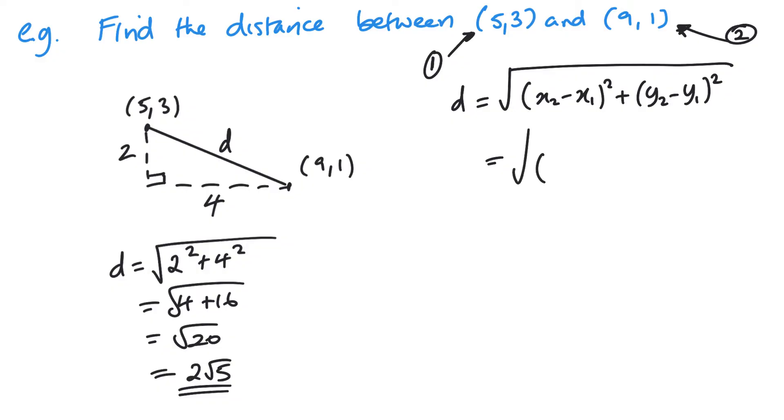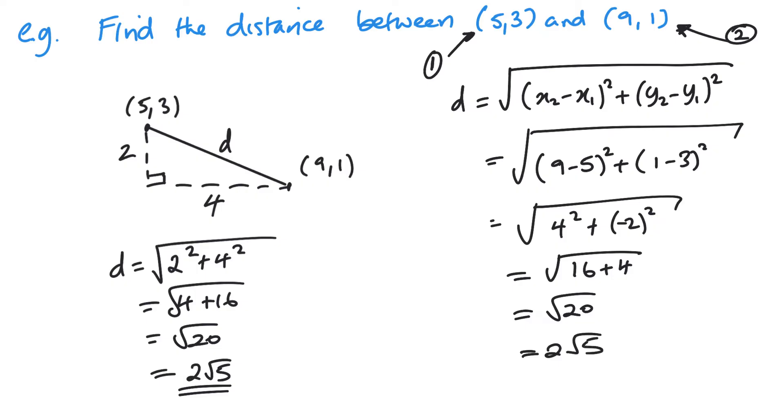Not that it matters which way around you do it. So x2 minus x1, 9 minus 5 squared plus 1 minus 3 squared. So what you can see here is I've got 4 squared plus a negative 2 squared. And that is the same as what I had previously. It's going to give me 16 plus 4, which is square root of 20 or 2 root 5.